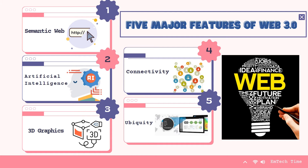Fourth, connectivity: with Web 3.0, information is more connected thanks to semantic metadata. As a result, the user experience evolves to another level of connectivity that leverages all available information. Fifth and lastly, ubiquity: content is accessible by multiple applications, and every device is connected to the web so that services can be used everywhere.